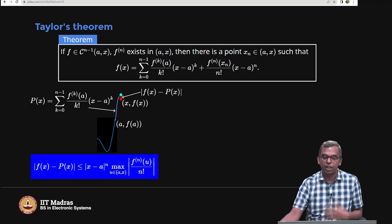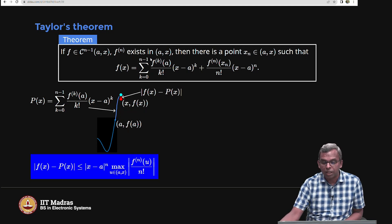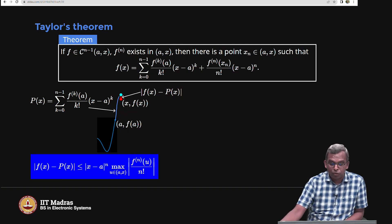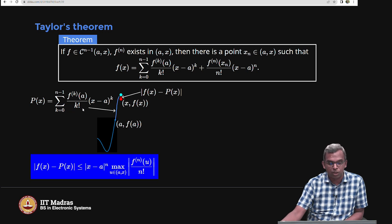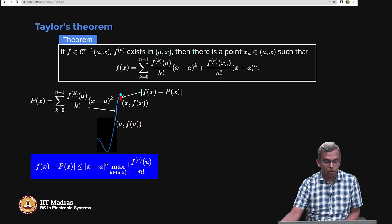You can substitute n equals 1 to get the constant approximation, n equals 2 to get the linear approximation, n equals 3 to get the quadratic approximation, and for general n you can keep increasing to get cubic, quartic, quintic, and higher degree polynomials. At A, I know F of A and all its derivatives up to n minus 1. I can construct a polynomial of degree n minus 1 and extend my curve based on this polynomial. At x, there will be an error that can be bounded: the absolute value of F of x minus P of x is less than or equal to mod (x minus A) to the power n.